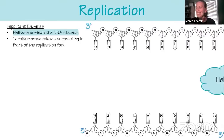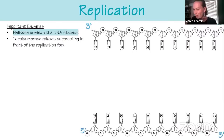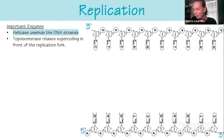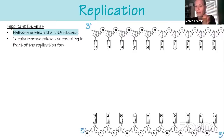The first thing in replication is helicase coming in to unzip the strand by breaking hydrogen bonds. It only unzips little segments at a time. Topoisomerase works downstream to relieve the strain — like preventing a shoestring from getting too tight and breaking as you pull the strands apart. Topoisomerase breaks the hydrogen bond, unravels a little, and pops it back together to prevent DNA damage.